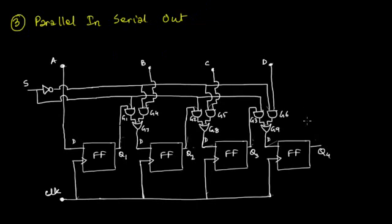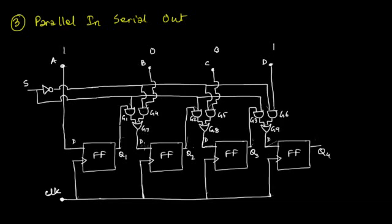Here we are with the circuit diagram of the parallel in and serial out register. In this form of register, the data is available as a parallel input. Let's say we have the data 1 0 0 1 as the input. The lines A, B, C and D all serve as the input lines. Looking closely at this circuit, you'll find that these gate assemblies — a digital gate assembly consisting of two AND gates and an OR gate — are present at the inputs to flip-flops 2, 3 and 4, while flip-flop 1 doesn't have any such logic circuitry at its input. That's the line A.